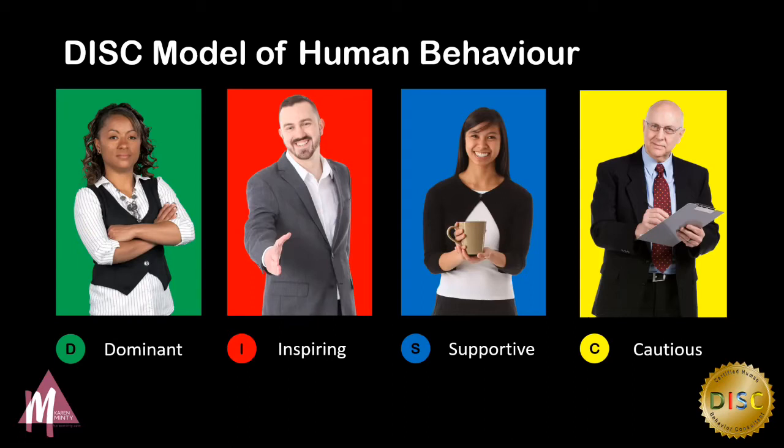Everyone is a combination of all four styles, so don't think you're only just one. I'm going to give you an example. I am an ID — a talkative go-getter. My daughter is a high S, which means she's very supportive, shy, quieter, and very sensitive. My son is a C — very calculated, logic, procedure, rules. So we've got all four personalities present in our house, which can sometimes be a bit of a challenge.